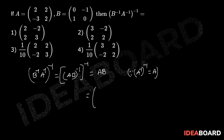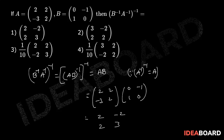Here A is [[2, 2], [-3, 2]] and B is [[0, -1], [1, 0]], so AB equals [[2, -2], [2, 3]]. So the correct answer is the first option.